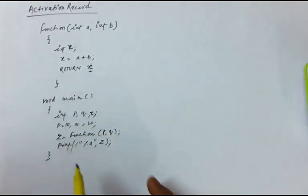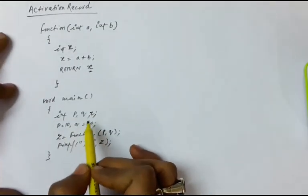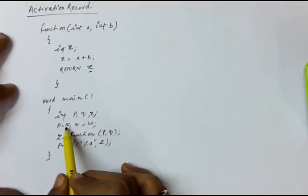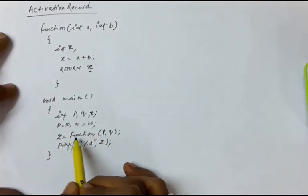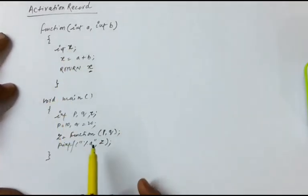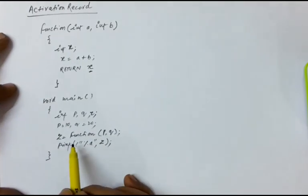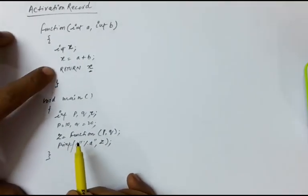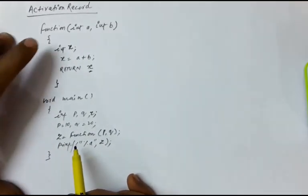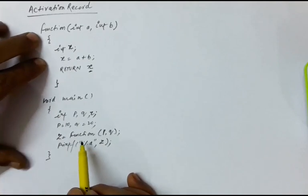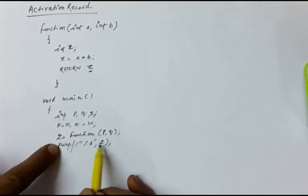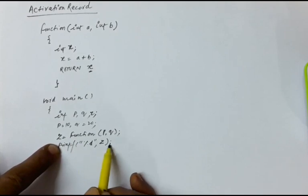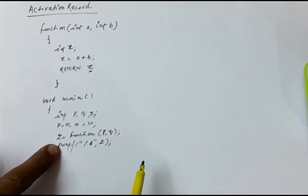In the main, you have called this function. In the main, there are variables p, q, and z. The initialized value of p is 10 and q is 20. You have called this function to add the values of p and q. After the function has finished, it returns the sum of the two numbers, which is stored in variable z. Then z is printed by the print function.